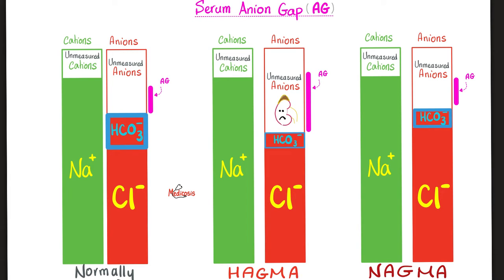pH is low, anion gap is high, bicarbonate is low, serum chloride is normal. HAGMA is normochloremic.